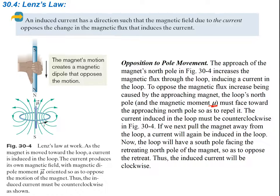Now if we pull the magnet away instead, a current will again be induced in the loop. Now the loop will have a south pole facing the retreating north pole of the magnet so as to oppose the retreat — kind of grabbing it and not letting it go away. So you want a south pole on the top side, with south on top and north on the bottom as the magnet moves away, and the induced current would be in the opposite direction.